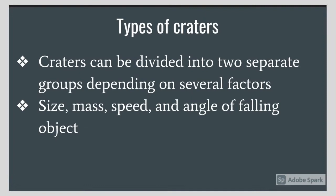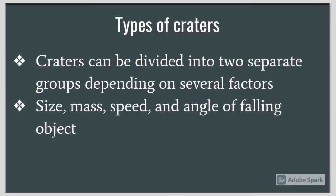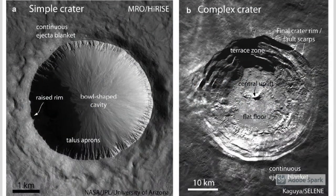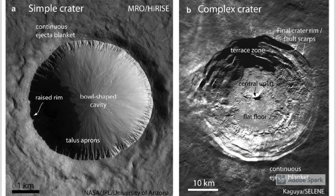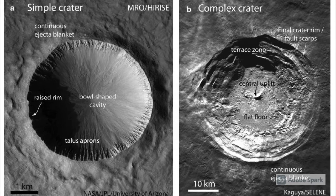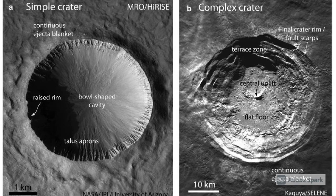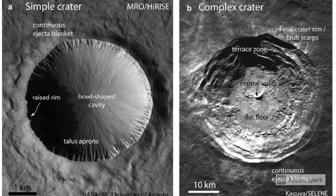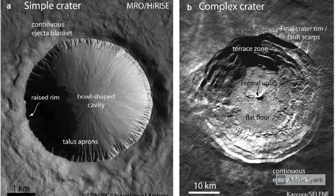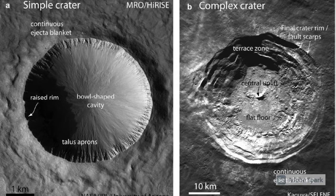Craters can be divided into two separate groups depending on several factors. The size, mass, speed, and angle of the falling object determines the type of crater. Small, slow objects have a low-energy impact and cause small, simple craters — these craters have a bowl-like shape with smooth walls and a diameter of less than 15 kilometers. On the other hand, large, fast objects release a lot of energy and form large impact craters. These craters have well-defined rims, a central peak, and a diameter between 20 and 175 kilometers.